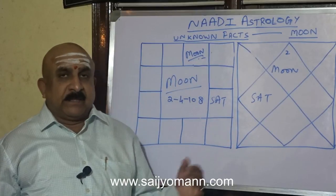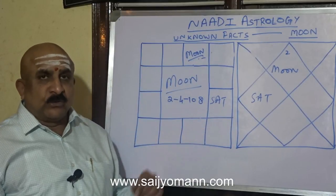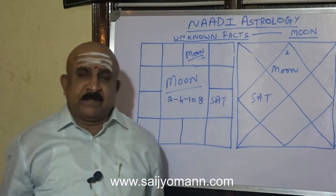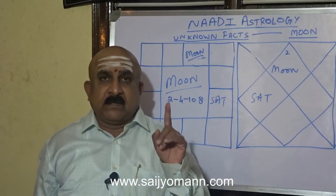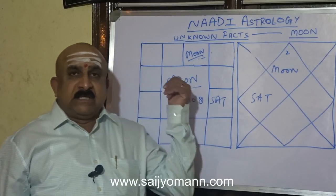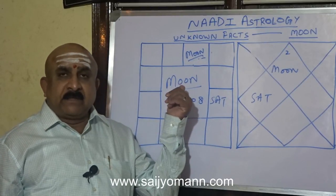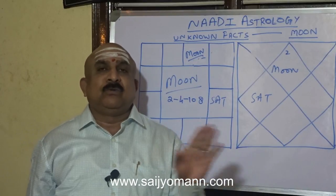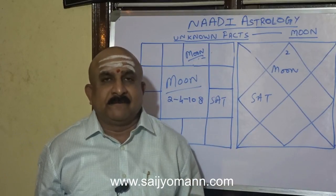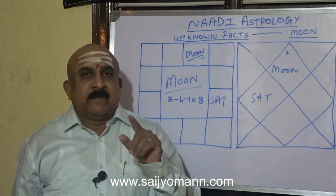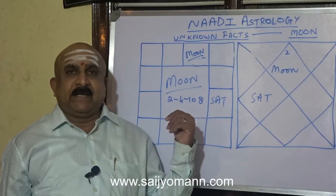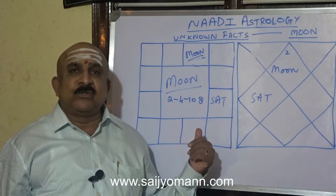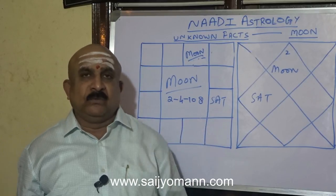Coming to the 4th house sukhasthana, when Saturn is there in the 4th house there is one change — she will have everything, but an unsatisfied life throughout. This is what we get when Saturn is placed in the 4th house from Moon.